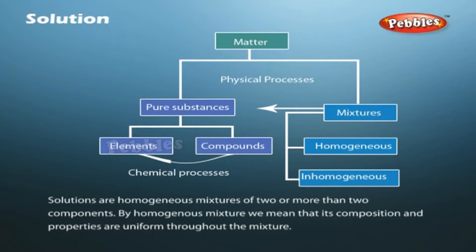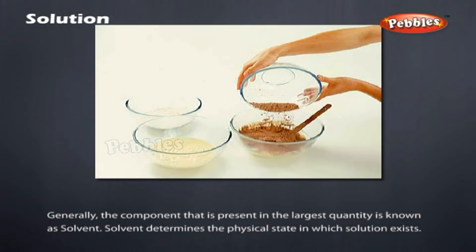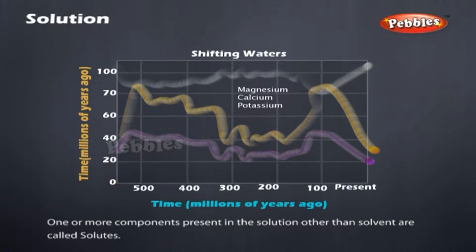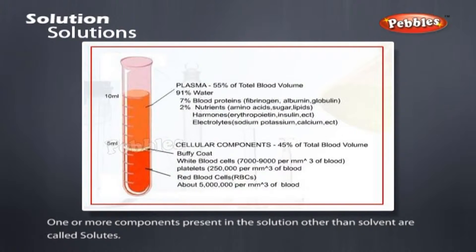Solutions are homogeneous mixtures of two or more than two components. By homogeneous mixture, we mean that its composition and properties are uniform throughout the mixture. Generally, the component that is present in the largest quantity is known as solvent. Solvent determines the physical state in which the solution exists. One or more components present in the solution other than solvent are called solutes.